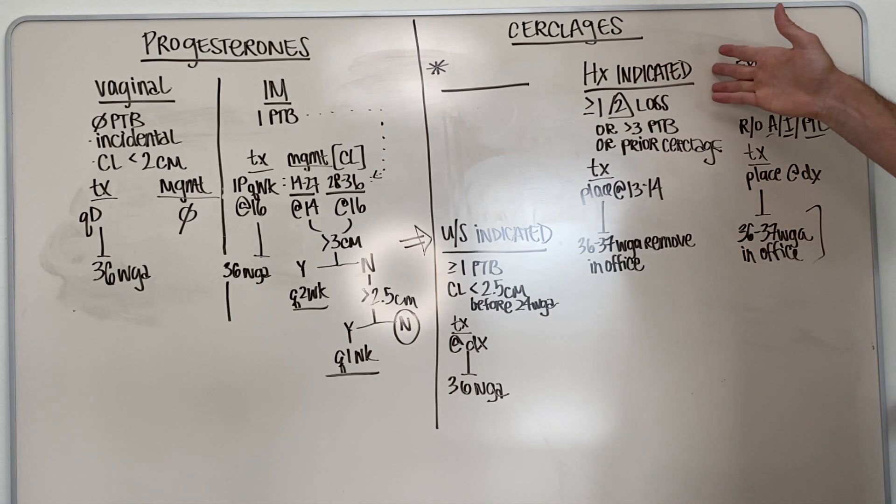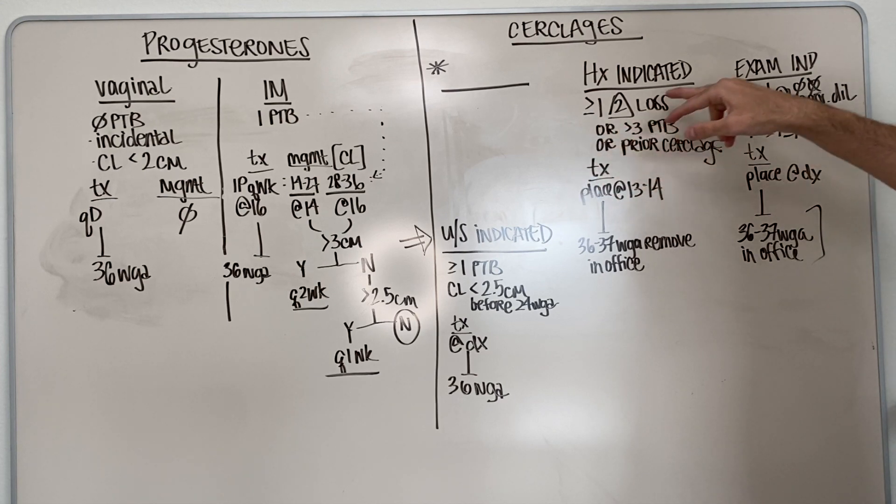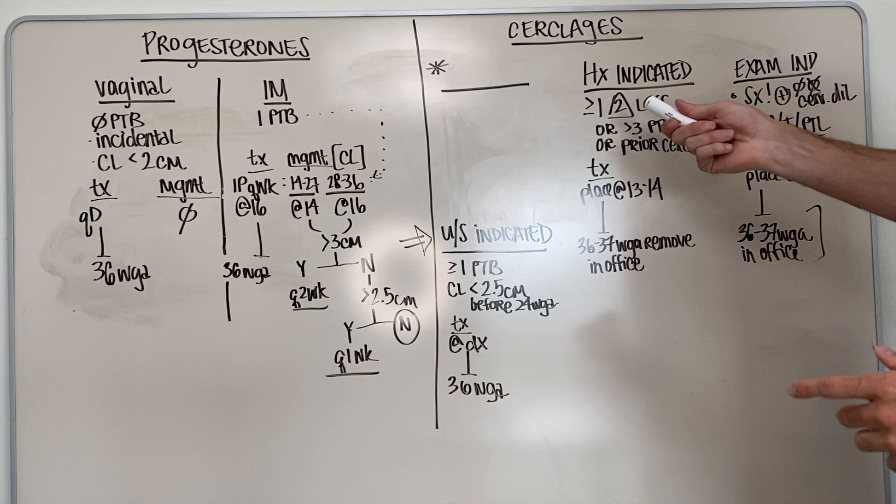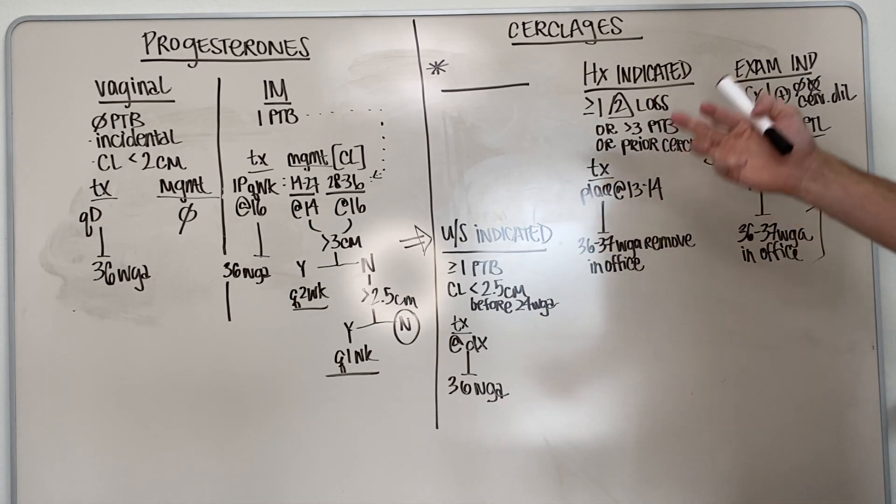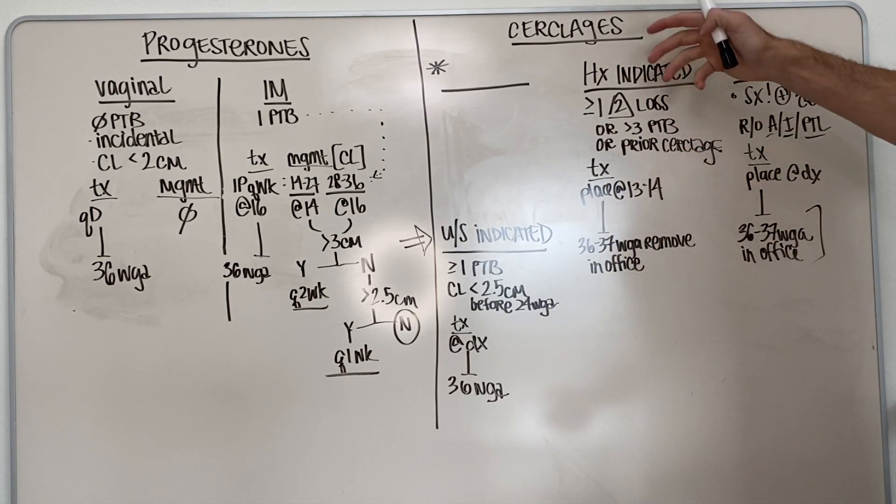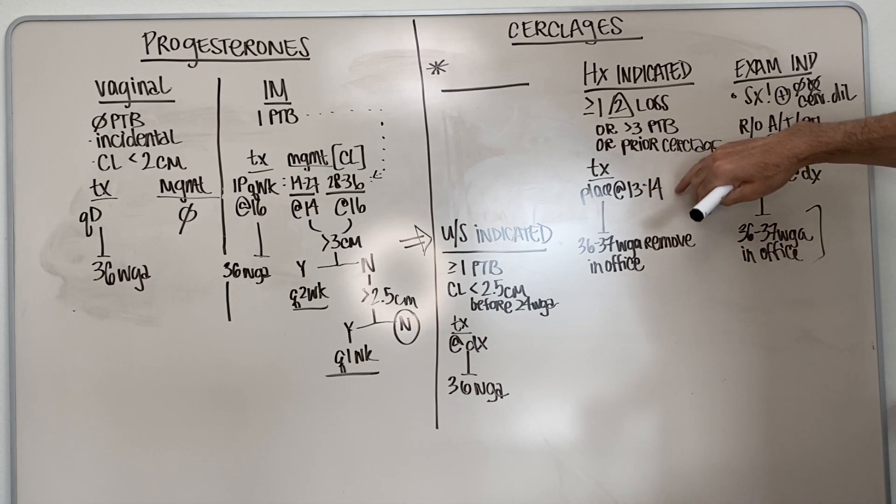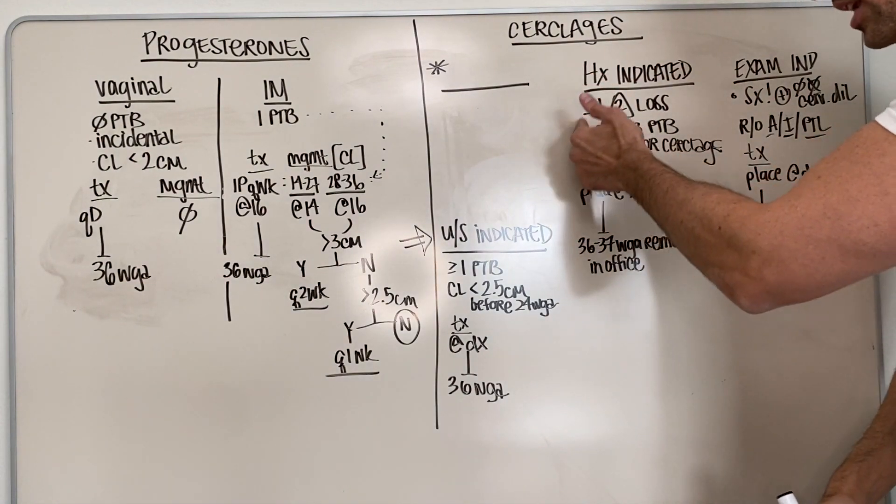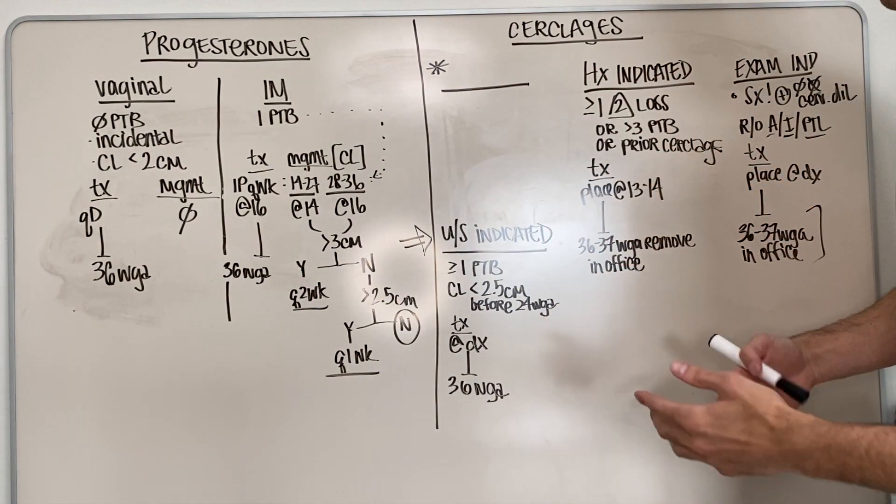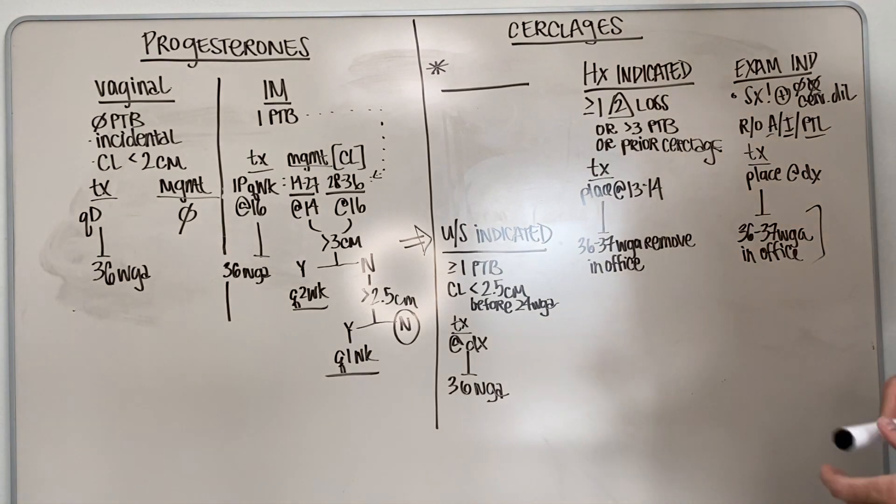So you also have history indicated. So the three main reasons why you would do history indicated is if they've had greater than one second trimester loss, or greater than three preterm births or prior cerclage placement. And this has to be like painless cervical dilation for secondary loss. It can't be for other reasons like abruption or P-PROM or stuff like that, or prior cerclage placement. So if they have those, then you're going to start treating them by placing a cerclage McDonald or Shirodkar at 13 to 14 weeks. So you know these things already so you don't have to wait around for them. And then you're going to take it out just like you would for the ultrasound indicated.